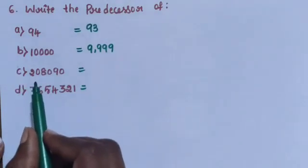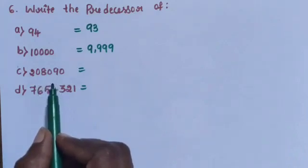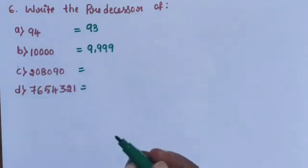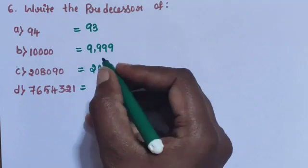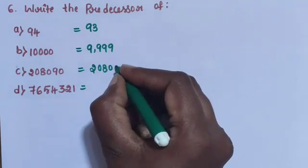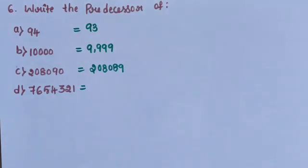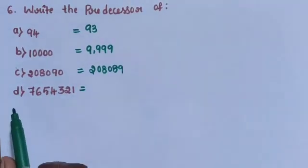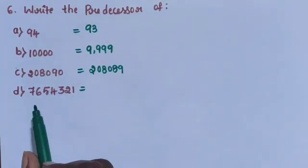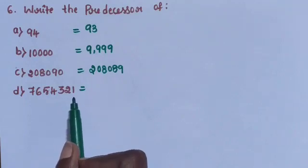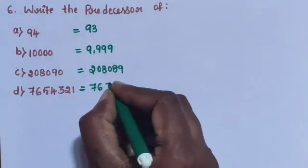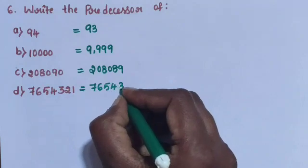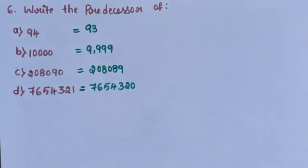Sub-question C: 2,08,090. The predecessor, meaning the number before, is 2,08,089. Sub-question D: 76,54,321. The predecessor is 76,54,320.